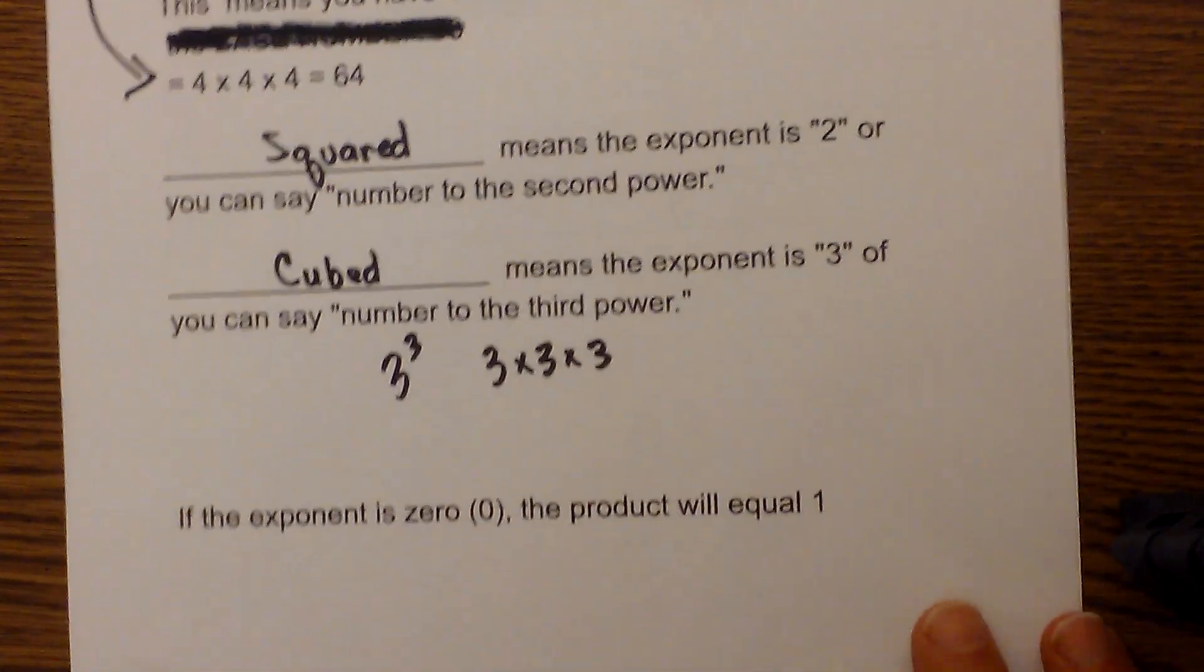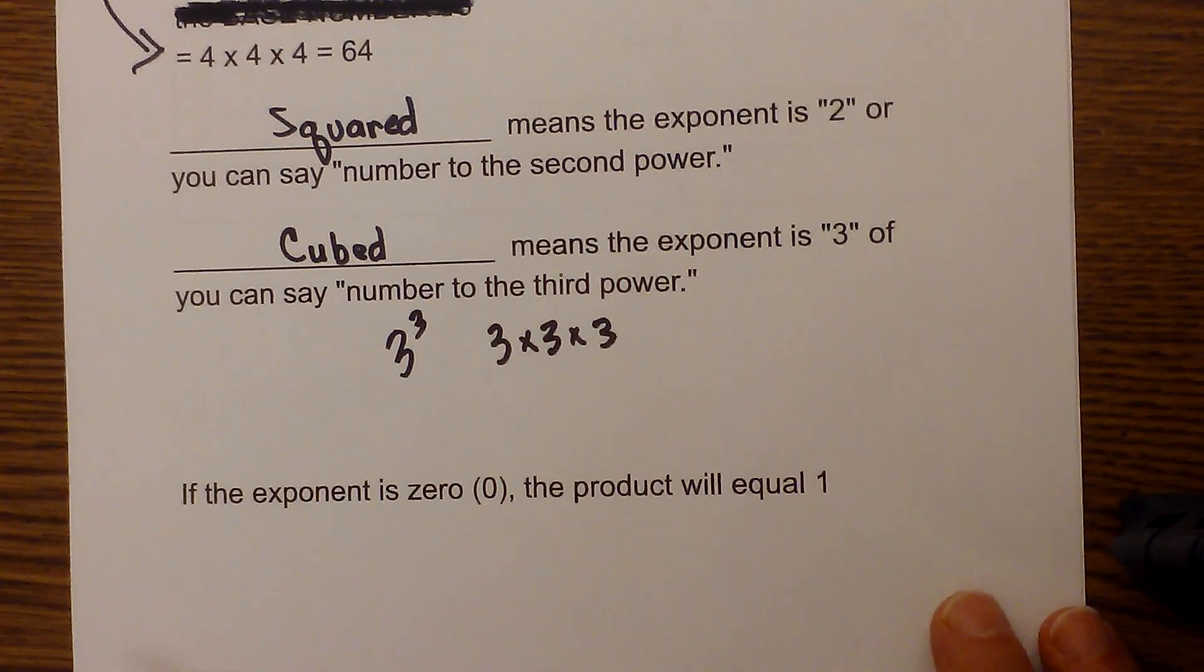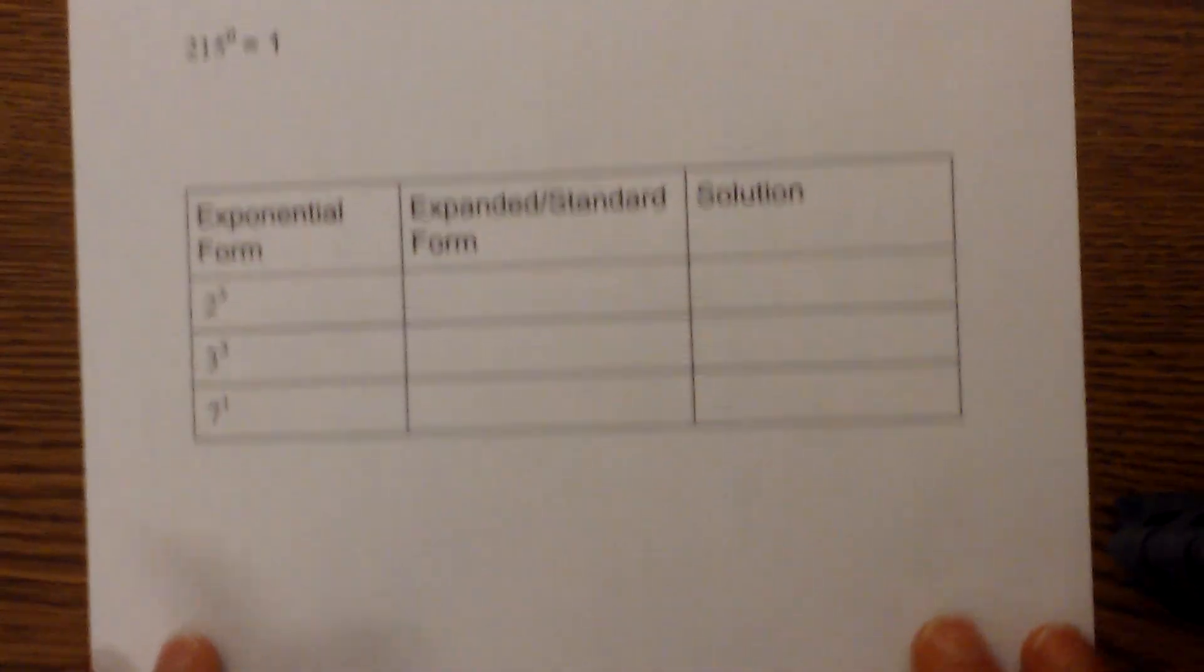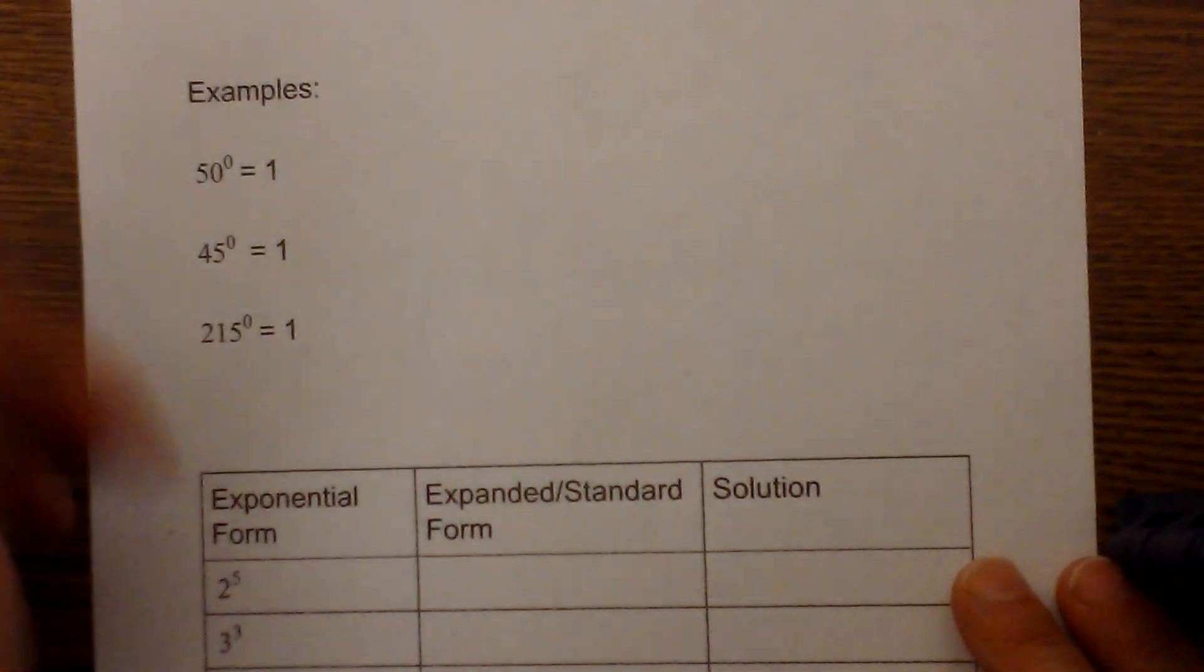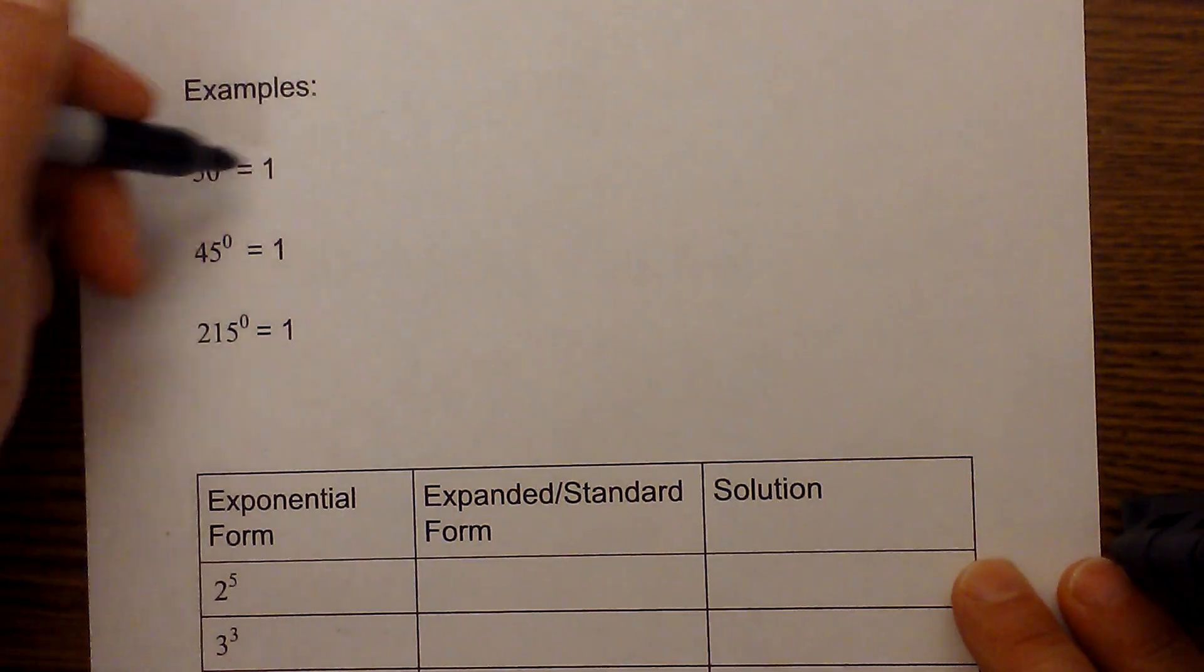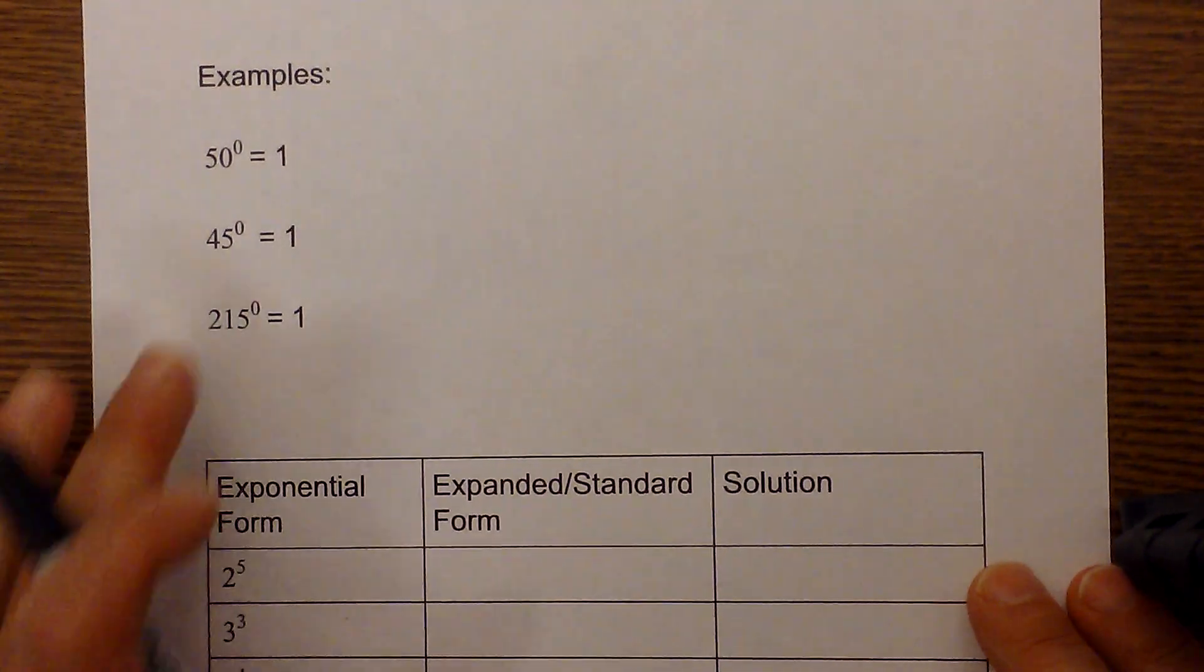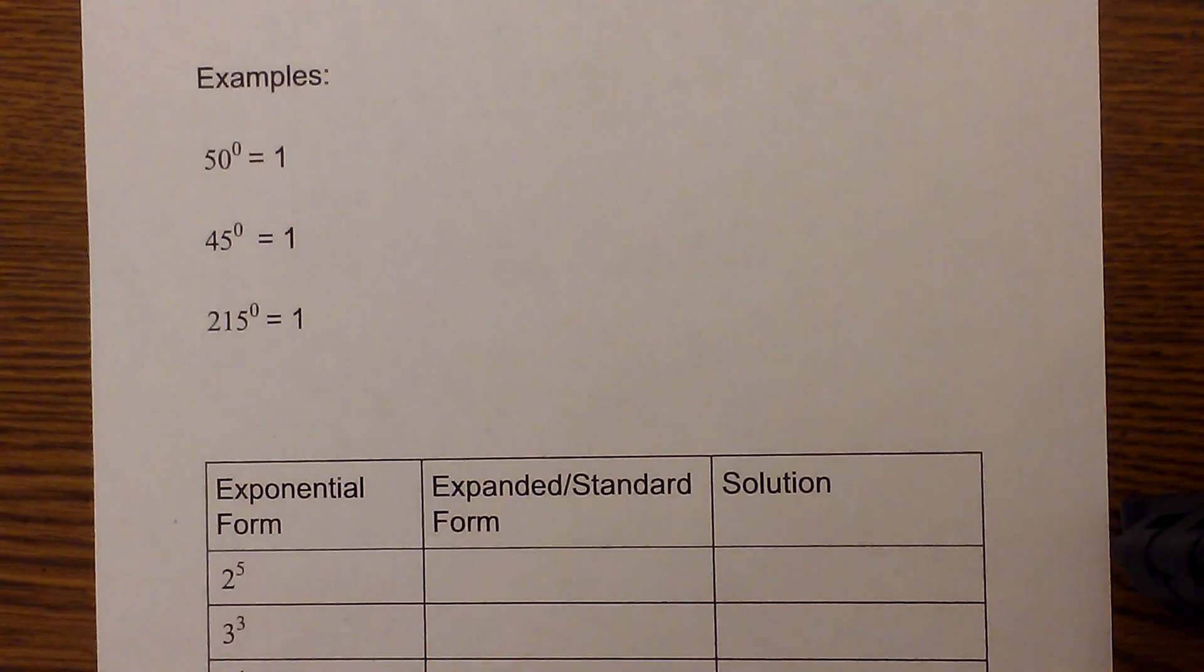There is a special rule. If the exponent is 0, the product will always equal 1. For example, 50 to the 0 power is 1, 45 to the 0 power is 1, and 215 to the 0 power is 1.